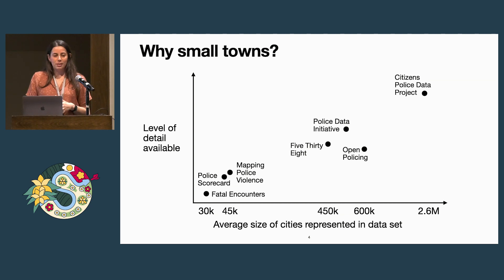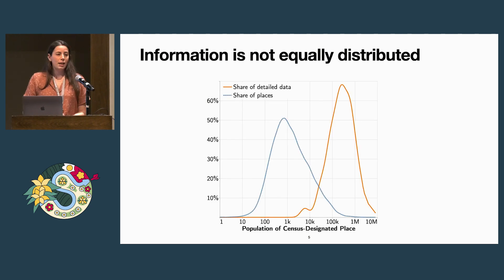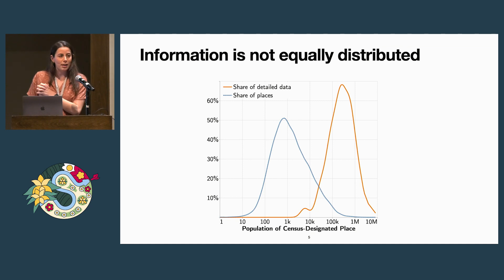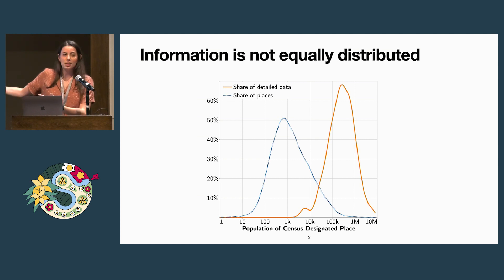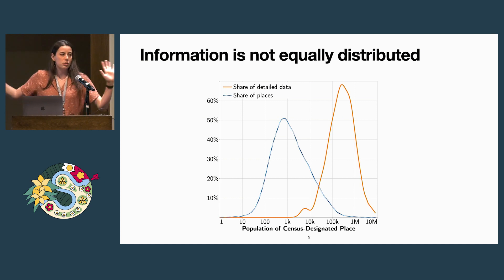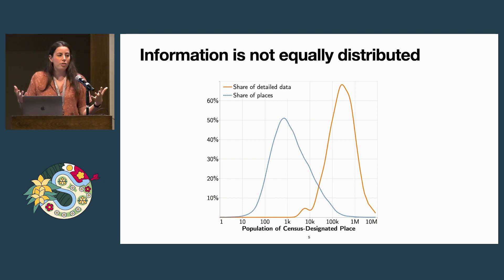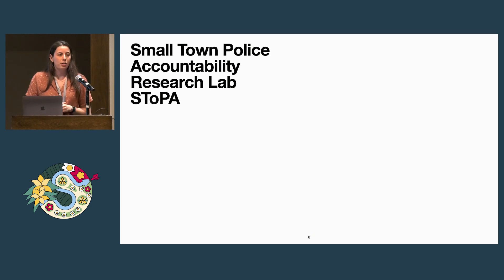We have some data available but not for small cities, and I want to highlight that about 60% of folks in the U.S. live in towns of 50,000 people or fewer — so it's not that everyone lives in large cities. The distribution of the size of places in census-designated places compared to where the data is available is very skewed. We have a lot of data available for bigger places but not for smaller places, and a lot of people live there.